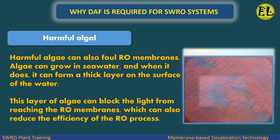Harmful algae can also foul RO membranes. Algae can grow in seawater, and when it does, it can form a thick layer on the surface of the water. This layer of algae can block light from reaching the RO membranes, which can also reduce the efficiency of the RO process.